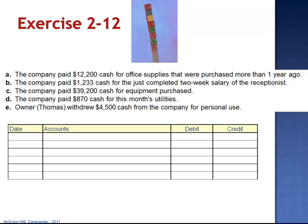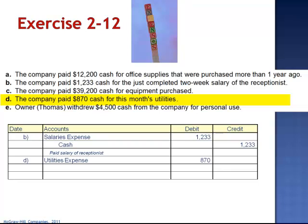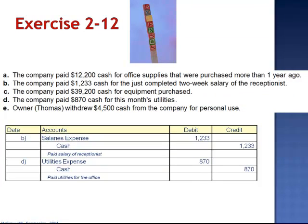When we journalize our two expense transactions, we have Letter B: a debit to salaries expense and a credit to cash. And Letter D: a debit to utilities expense and a credit to cash.